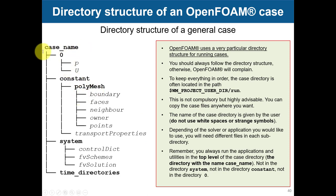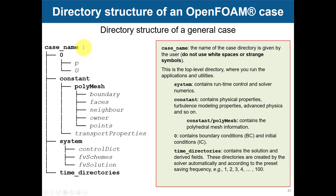You will always find this standard directory structure: folder 0, constant, and system. In 0 you have boundary and initial conditions — human-readable flat files that you edit manually. In constant you have files related to the models you're using, as well as mesh information generated automatically by OpenFOAM when you create or convert the mesh. You can modify the boundary file there to rename boundaries. You also define transport models here, such as transport properties — viscosity, Newtonian model, etc. Different solvers may have different files in constant.